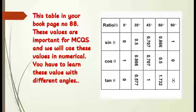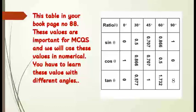Cos 0° = 1, cos 30° = 0.866, cos 45° = 0.707, cos 60° = 0.5, cos 90° = 0. For tangent theta, the angles are the same: 0°, 30°, 45°, 60°, and 90°. You have to learn these values because they are very important from the point of view of MCQs and also for numericals.